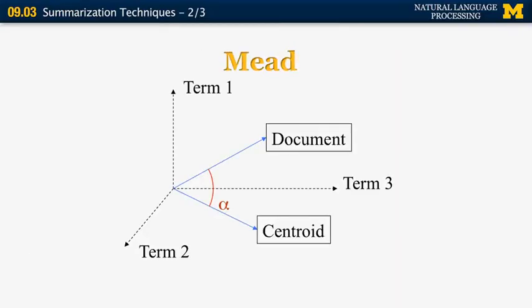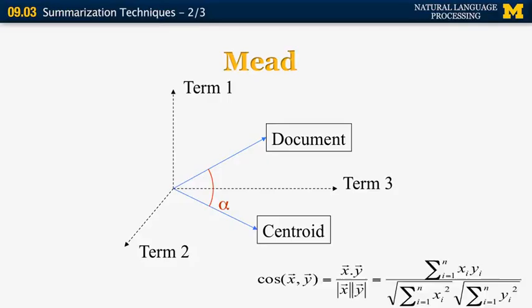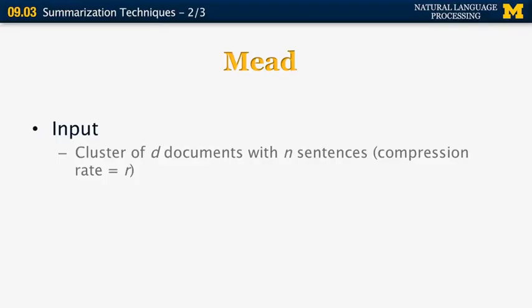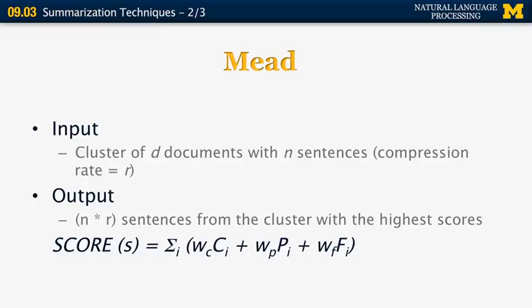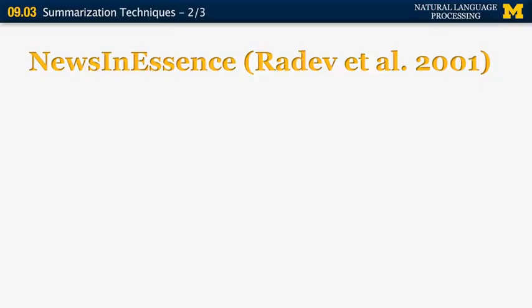The centroid uses a vector space representation of documents and sentences. Alpha measures similarity between a sentence and the centroid of the cluster, computed using cosine similarity — the normalized dot product of the sentence vector and the centroid vector. The input to MEAD is a cluster of D documents with N sentences and a compression rate R. The output is N×R sentences with the highest scores, computed as a linear combination of centroid, positional, and other features. MEAD was used in the early 2000s in News In Essence, a system for summarizing news articles on the web.